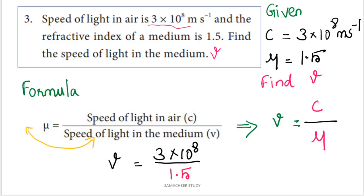We rearrange the formula to solve for v. Since mu equals c divided by v, we can rearrange to get v equals c divided by mu. Now substituting the values: c is 3 × 10⁸ and mu is 1.5, so v equals 3 × 10⁸ divided by 1.5.